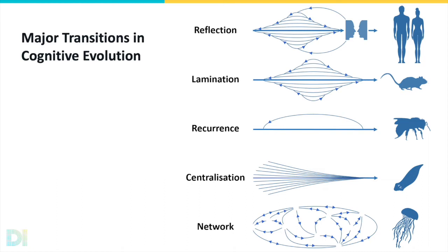As our working hypothesis, we propose five major transitions in the evolution of animal cognition. The first important transition occurs when organisms start using neurons to accelerate communication between different parts of their body. We call these relatively undifferentiated nervous systems networks.